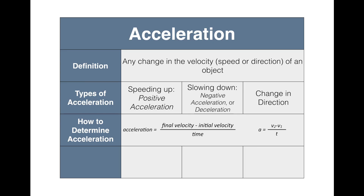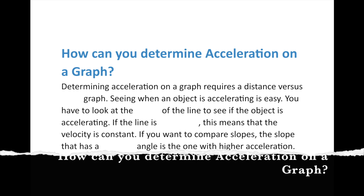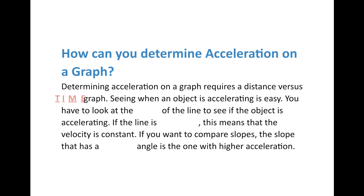Let's add the formula to our graphic organizer: acceleration equals final velocity minus initial velocity over time, or a = (v₂ - v₁) / t. Now let's talk about determining acceleration on a graph. On a velocity-versus-time graph, you look at the slope of the line. A straight line means constant velocity — no change, so no acceleration.